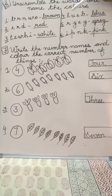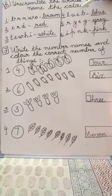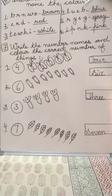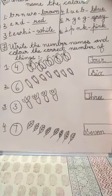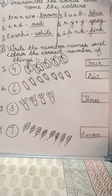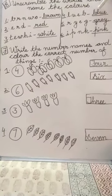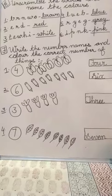Let us move to the fourth bit. L, U, E, B. Again four letters are given. So arrange it properly so that you will get the color's name. That is B, L, U, E. Blue.